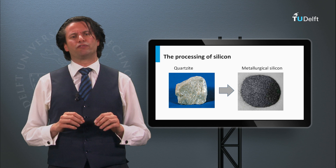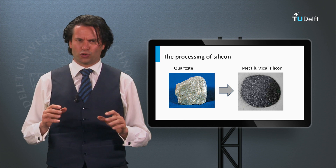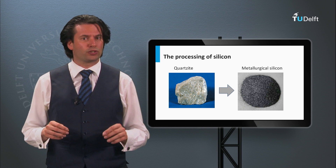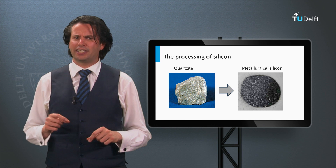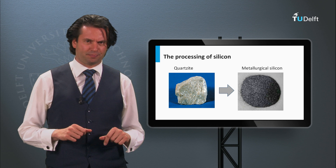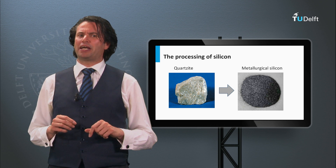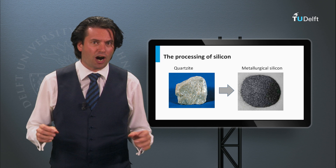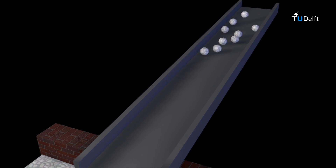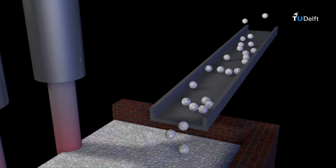The lowest quality of silicon is the so-called metallurgical silicon. The source material for making metallurgical silicon is quartzite, which is a rock of pure silicon oxide. In the next animation, the process of making metallurgical silicon out of quartzite is shown, where the silicon is purified by removing oxygen.